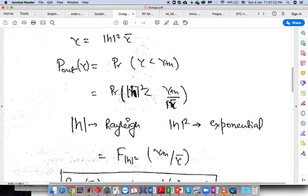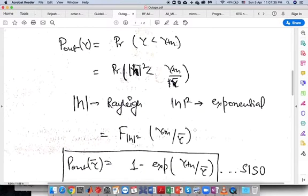To recall the basics, we have seen that h is Gaussian. Mod of h, which is the envelope of h equals hr plus i times hi, and mod of h square follows the exponential distribution.